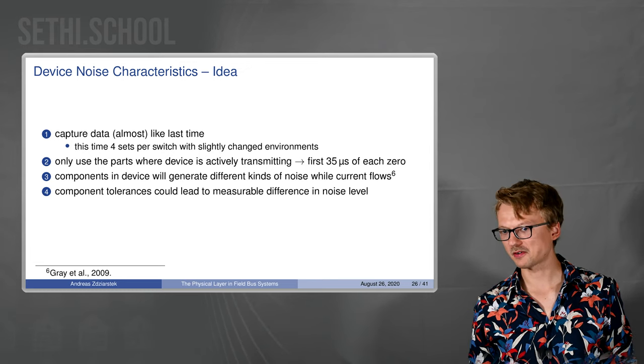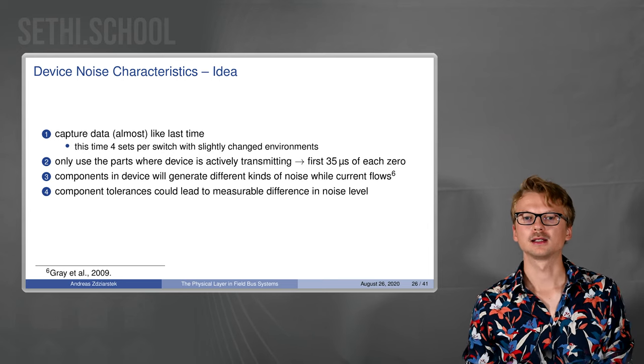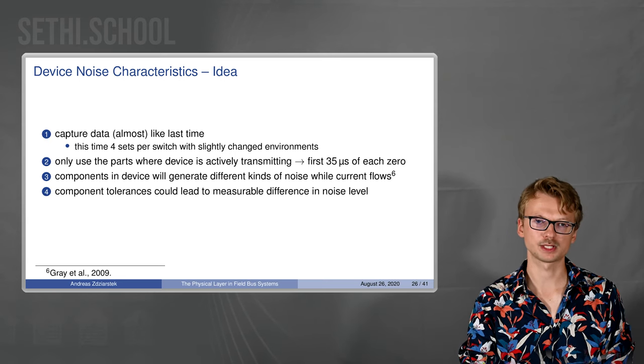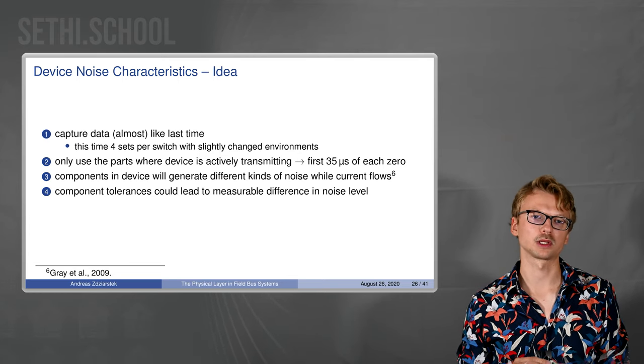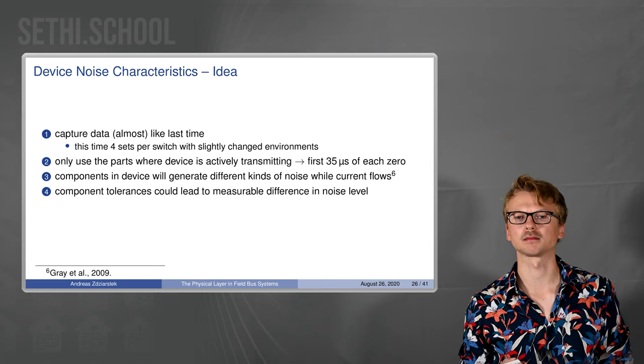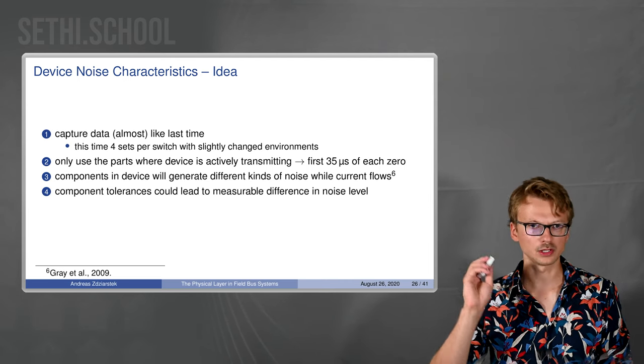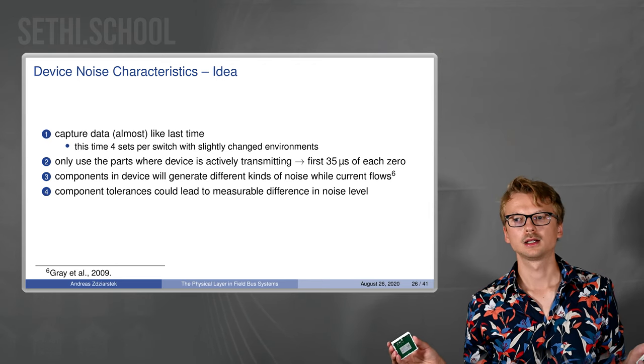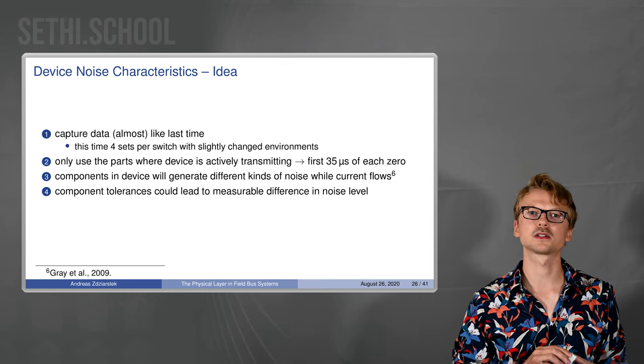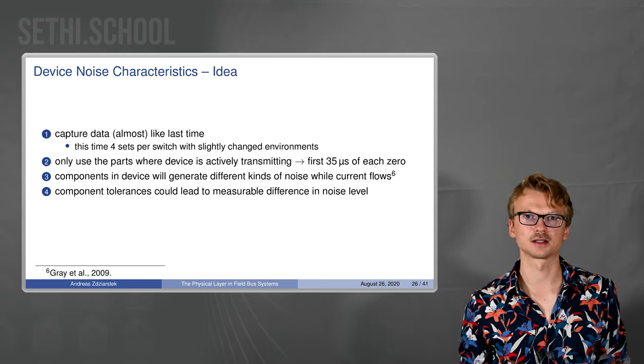But now for a more directed approach which is maybe a bit more intuitive. We basically make the data capturing same like last time, we press the buttons a lot of times. This time we do four sets of button presses where we switch them around twice so we control for stuff like heating because at the time we thought maybe this might make a difference. As said, only look at the first 35 microseconds of each zero. I told you about why this noise thing happens, there is a citation which goes into detail about that, which kind of components do which kind of noise.